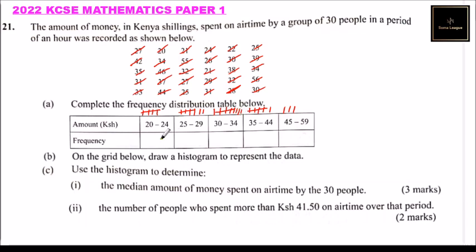Now we can fill in our frequencies from the tallies. We have 5 in the first class, 7 in the second, 9 in the third, 6 in the fourth, and 3 in the fifth. Using the tally method helps you not to mix up your data.